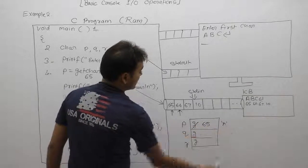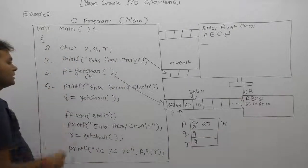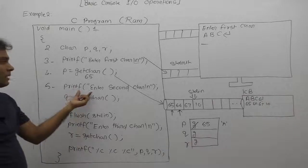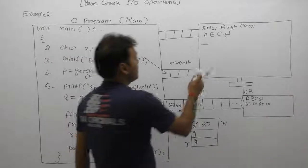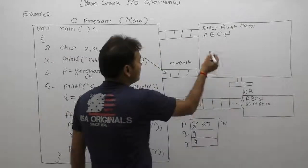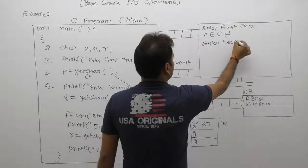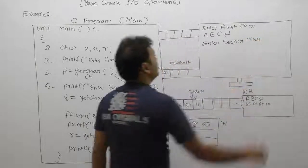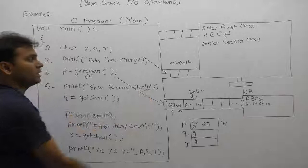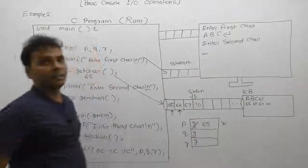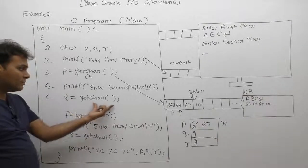65 is assigned to the variable p. So p now holds 65, which is the ASCII value of 'a'. Next, the fifth statement executes — printf displays the message asking to enter the second character, and the cursor moves to the next line due to the newline character.